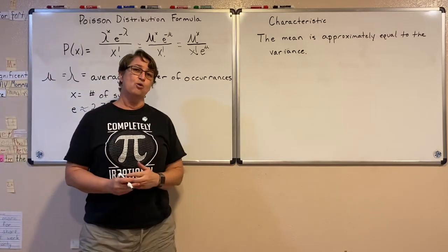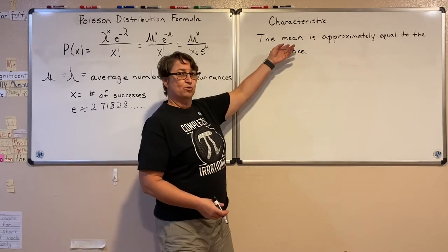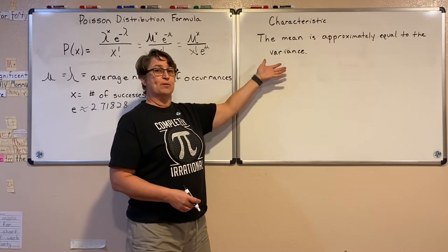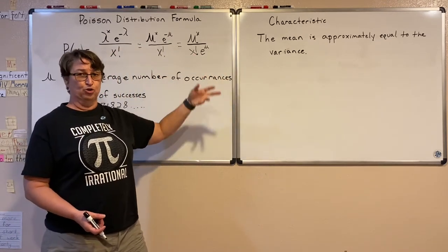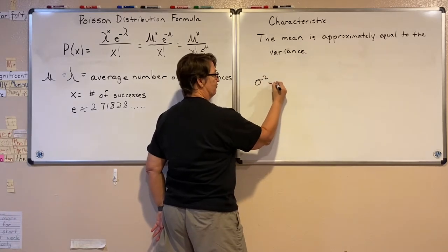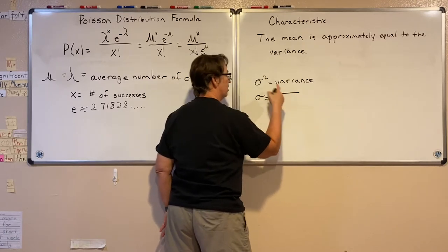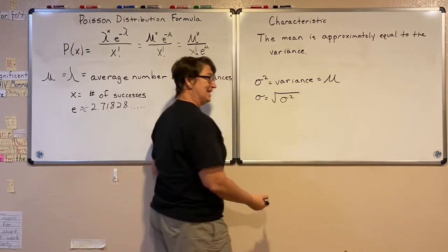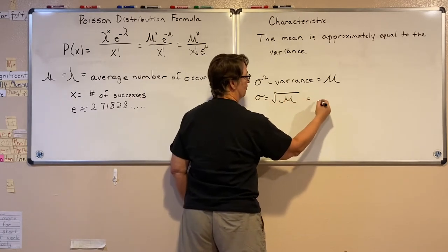A couple of characteristics: the mean is approximately the same as the variance. In some problems we'll be given the mean, which is our mu for the formula, but in some we'll just be given the variance. Since variance and mean are approximately the same, if you're given the variance, that will be your mu. Also, variance is standard deviation squared, so the standard deviation of a Poisson is approximately the square root of the mean.